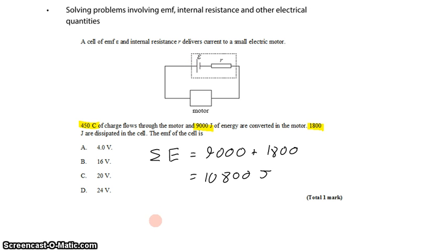Now, the EMF of the cell, or the voltage of the cell, would then be the energy delivered per unit charge. Because it's the same charge delivering energy to both devices, it's the same 450 charges delivering a total of 10,800 joules. So this is just 10,800 joules divided by 450 coulombs, which works out to 24 volts.